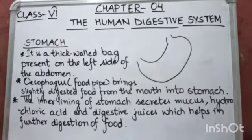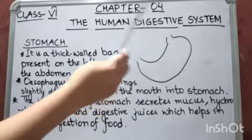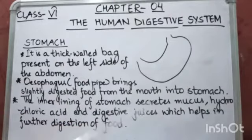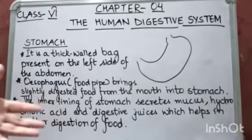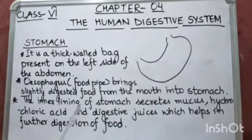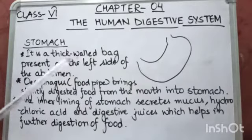Let's start with the stomach. As you can see, the stomach is a pouch-like structure — a bag-like structure or a thick-walled bag which is present on the left side of our body. The esophagus, or food pipe, brings slightly digested food from the mouth into the stomach.